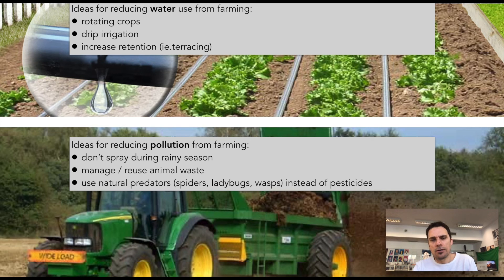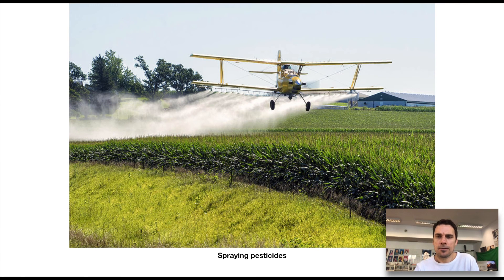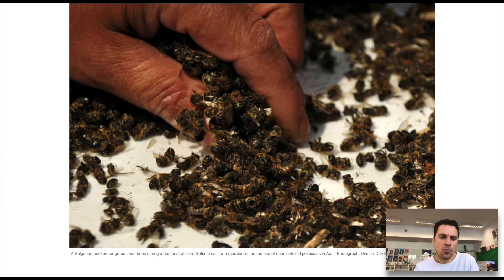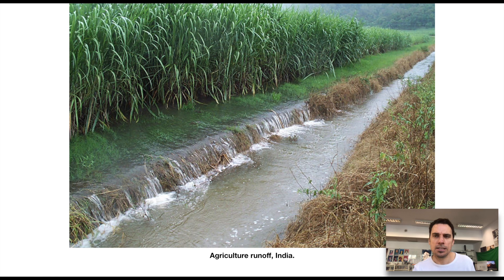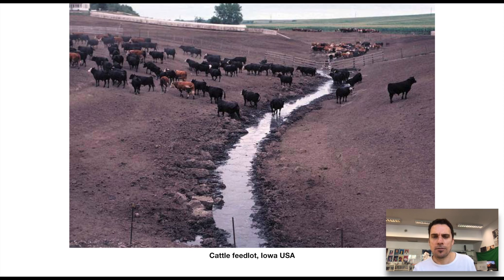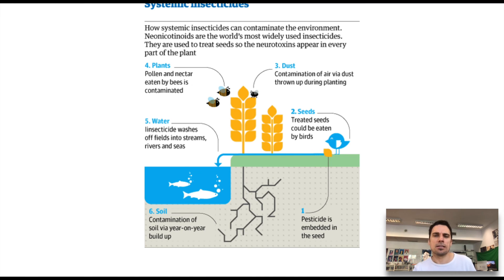Using natural predators is another approach — ladybugs are phenomenal at eating aphids off plants, so you don't have to spray. Pesticide images show quite detrimental effects for things like bees, which are essential pollinators for all the fruits we have. For any flowering plant, we need bees and other pollinators. Agriculture runoff is also a big issue — we lose a lot of nitrates into water systems, and runoff from cattle farms heads into the ocean and waterways, which can lead to damaging effects including eutrophication, which we'll talk about later.